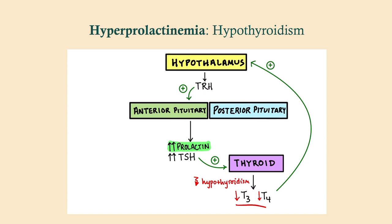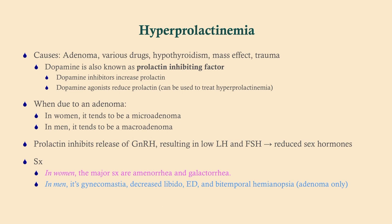Prolactin not only increases milk production as its name implies, but it also decreases GnRH, which then decreases LH and FSH, affecting the reproductive system. Dopamine is also known as prolactin inhibiting factor. When hyperprolactinemia is due to an adenoma in women it tends to be a microadenoma, so bitemporal hemianopsia is less likely, but in men you probably will see it. In women, the major symptoms are amenorrhea and galactorrhea; women have more breast and ductal tissue, so they will produce milk.